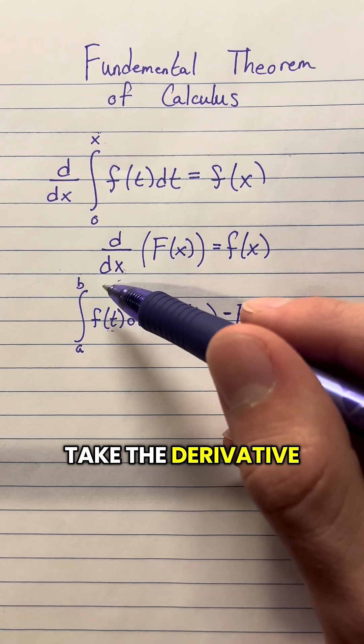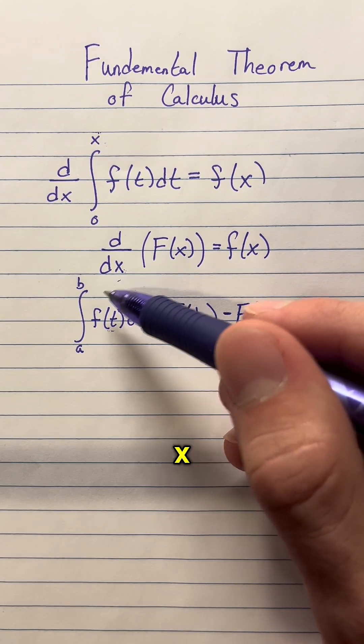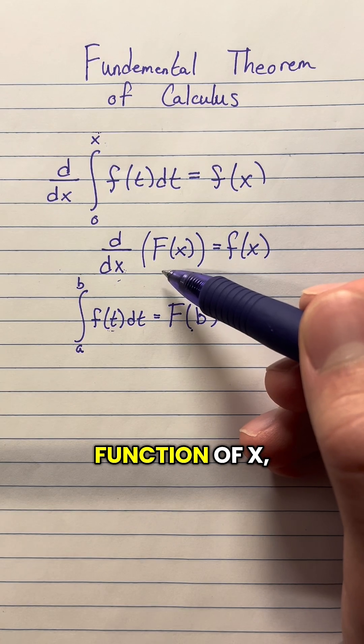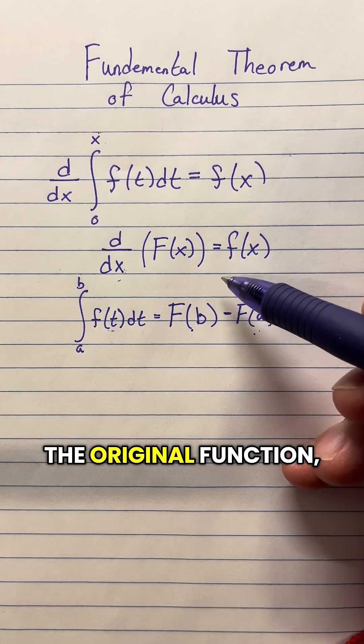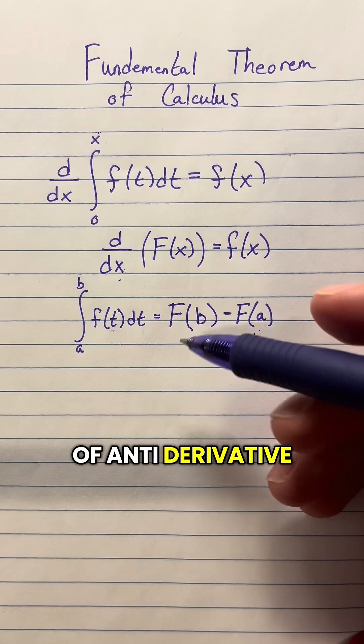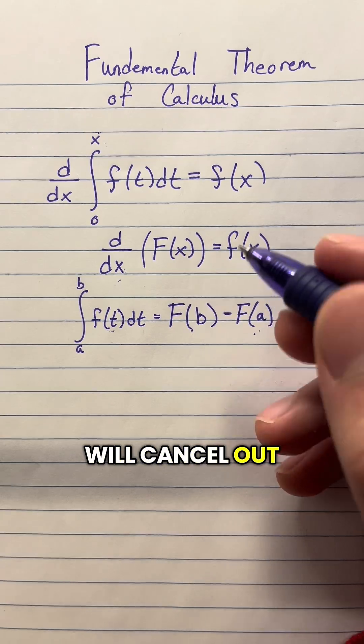And if you take the derivative with respect to x of the antiderivative of that function of x, that's just going to be the original function — the derivative and antiderivative will cancel out.